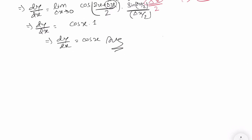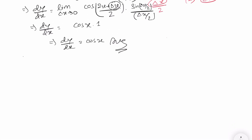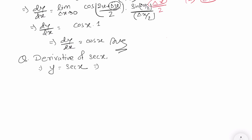Now we will see one more example using this method. This time I am going to find the derivative of sec x. We assume y equals sec x. Whenever we are finding the derivative of a function that is not directly in the form of sin x or cos x, the first thing we should do is try to transform it into sin or cos. Since we have sec x, we can convert it to 1/cos x.